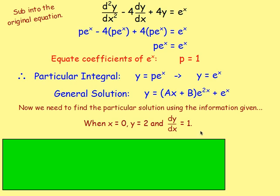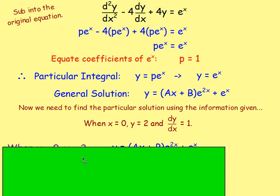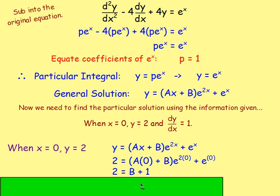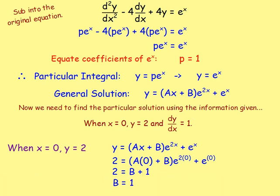We are told when x=0, y=2, and dy/dx=1. Substituting x=0 and y=2 into the general solution: 2 = (a·0 + b)e^0 + e^0. Since a·0 = 0, e^0 = 1, this gives 2 = b + 1, so b = 1.